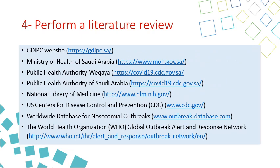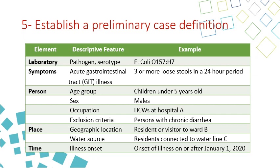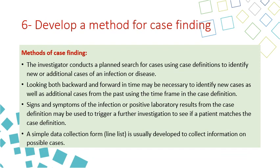The fourth step is to perform a literature review. There are around eight reference links you might review to learn more about the steps of investigation of an outbreak. Step number five is to establish a preliminary case definition. The key elements include descriptive features and examples covering laboratory findings, symptoms, person, place, and time, which you can examine to develop a case definition for the specific outbreak situation.